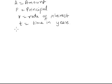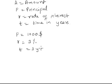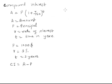Suppose you are depositing a principal of 1000 dollars in a bank at 3% per year for 3 years. The amount at the end of 3 years is calculated using this formula. Compound interest equals amount minus principal — so it acts like a bonus on the sum of money you are depositing or investing.